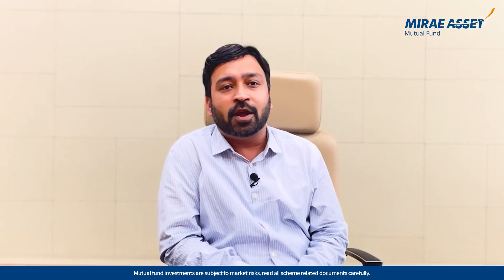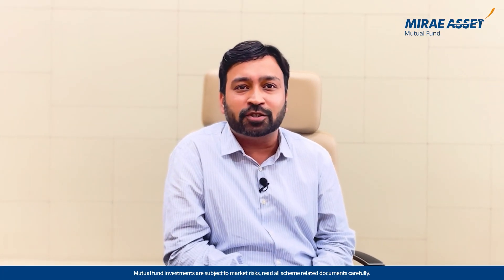So you can invest 5 lakhs using STP by selecting a debt mutual fund which gives you the facility to invest in any equity mutual fund. Once you select a debt mutual fund, you can invest the entire sum of rupees 5 lakhs in the debt mutual fund, and can eventually have it transferred into an equity mutual fund at regular intervals as per the frequency of your choice.